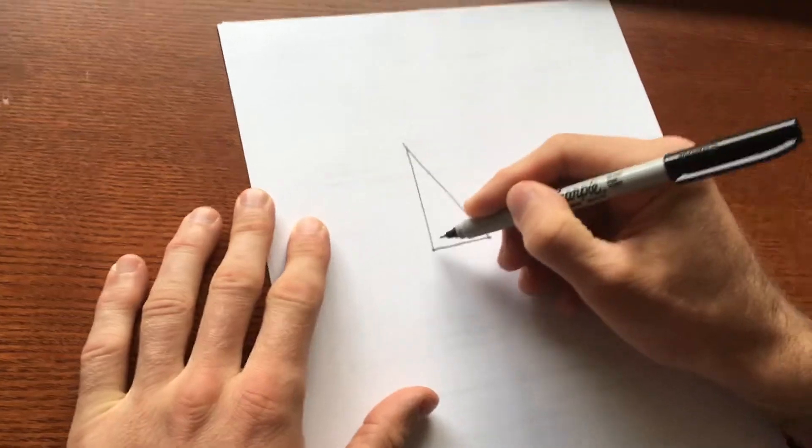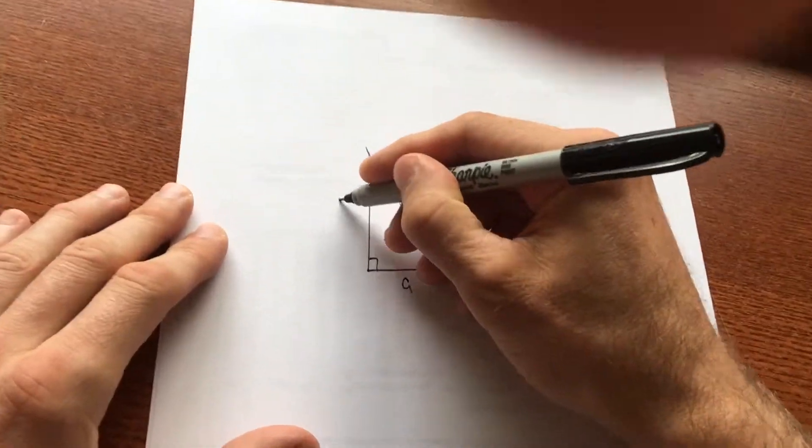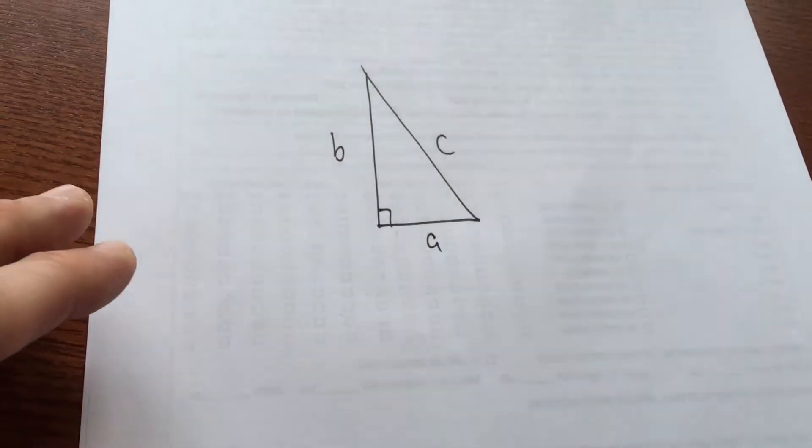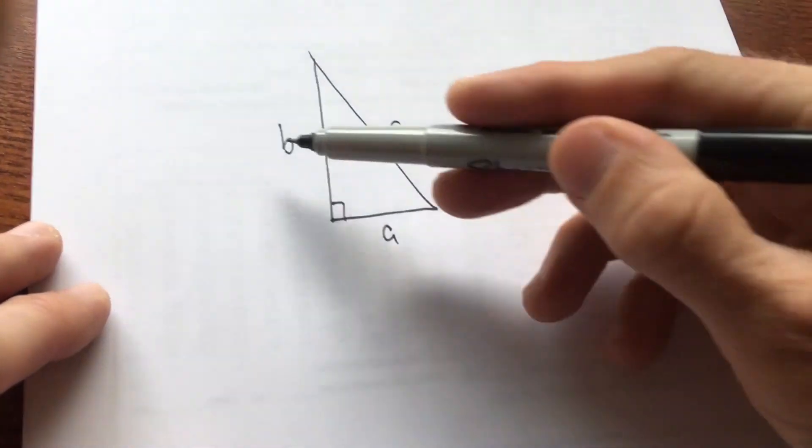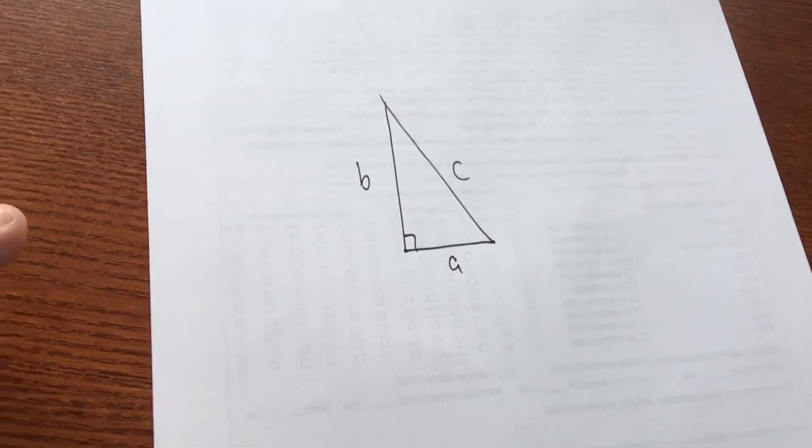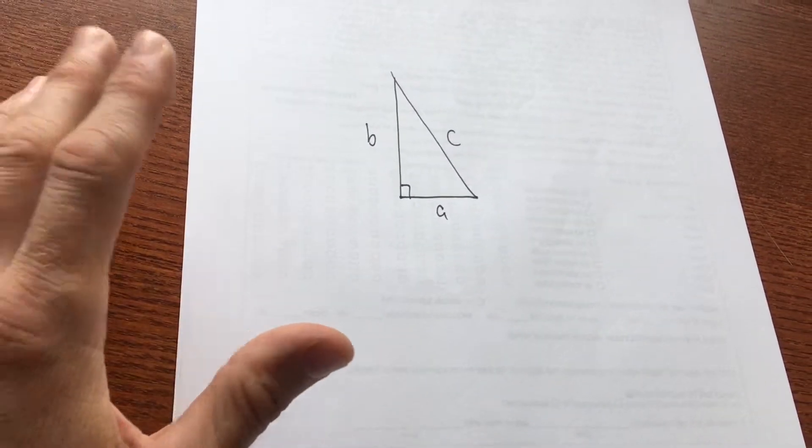So if we have a right triangle right here, where this side has length a, this side has length b, and this side has length c, we want to show that a squared plus b squared equals c squared. But why? Why is that the case?